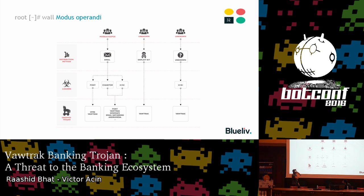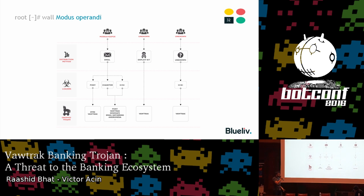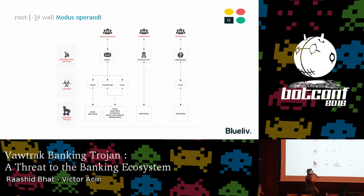Besides Moscow Zappo's email distribution campaign, we found two other sources of Vawtrak. Moscow Zappo's main distribution method was email campaigns with a Word document attachment containing a Pony Trojan or H1N1 loaders, which afterwards deployed the Trojan. We detected these ponies dropping Dyre and Vawtrak, and the loaders deploying Pony, Vawtrak, Sensei, an email gathering Trojan, and Andromeda, among others. We also found Vawtrak being distributed via exploit kits to a lesser extent, and a third unknown group using H1N1 that we couldn't connect to Moscow Zappo.